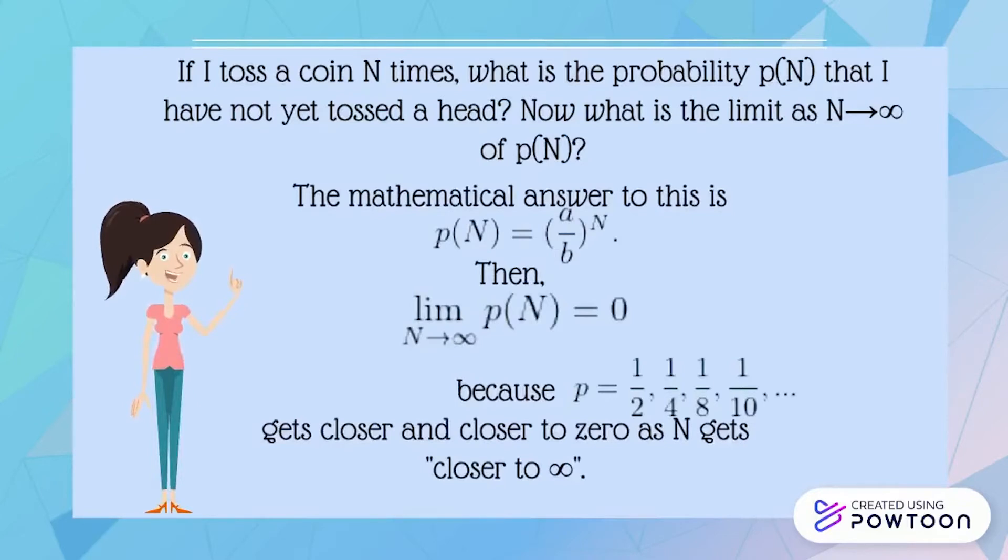Rephrased as a limit problem we might say: If I toss a coin N times, what is the probability p(N) that I have not yet tossed a head? Now what is the limit as N approaches infinity of p(N)? The mathematical answer to this is p(N) equals (1/2)^N. Then the limit of p(N) for N approaches infinity equals zero, because p equals 1/2, 1/4, 1/8, 1/10, and etc., gets closer and closer to zero as N gets closer to infinity.